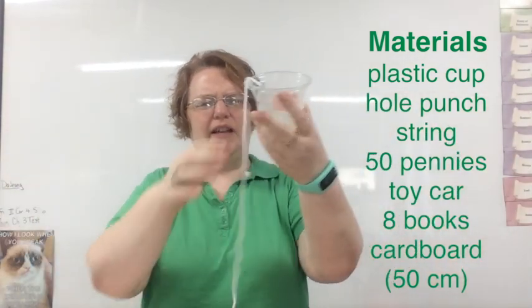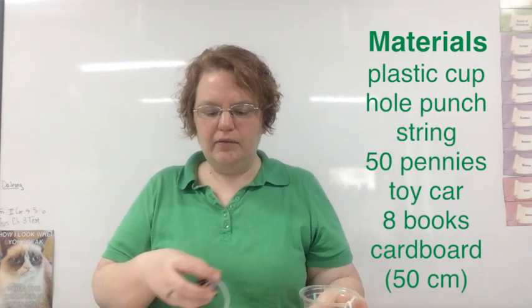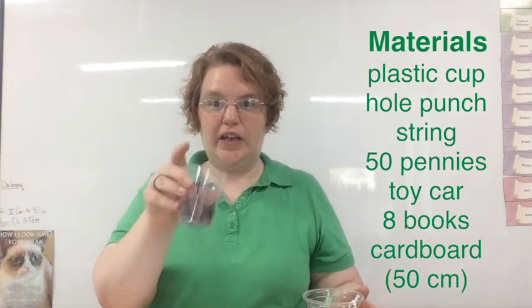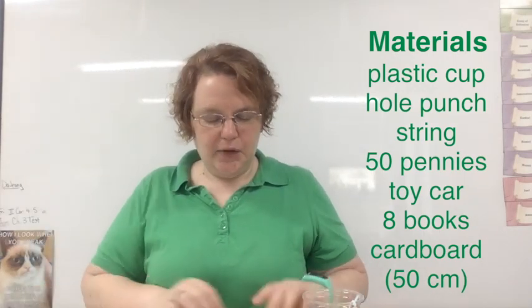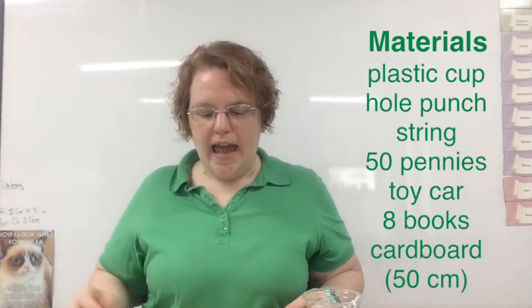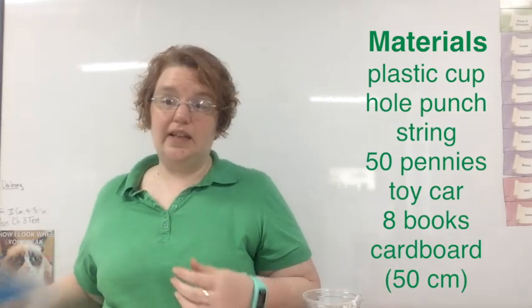All right. A plastic cup and a hole punch, and that hole punch is needed to make a hole on the end. And if you want to try this at home, you can follow. And then you need a string about a meter long. Okay. A string. And I apologize. This is white in color. All right. But that's a string that is about a meter long. 50 pennies, which I have here from our other activities. A toy car, which here on my toy car.